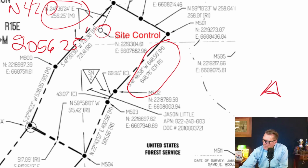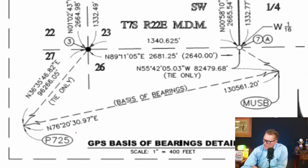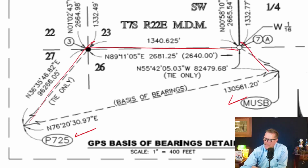To somebody that doesn't know better, what should it look like? Well, for instance, I could take one of my core stations and tie it to this boundary. These two points would be tied together and then I could run a traverse and close it. Here, I have a core station and a core station. I have a bearing and distance between them, which I can verify by inversing the published coordinates that would be shown on the map. Then I have tie distances to the boundary and a line that's on the boundary.